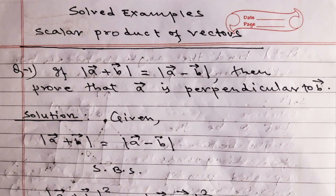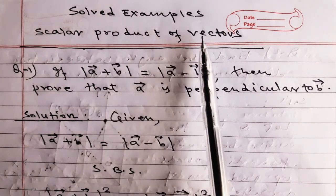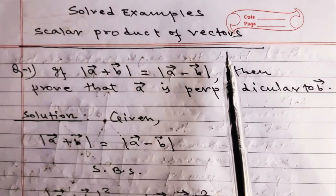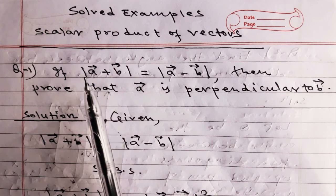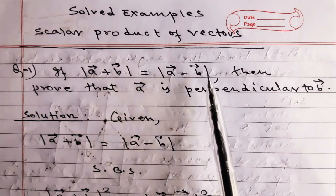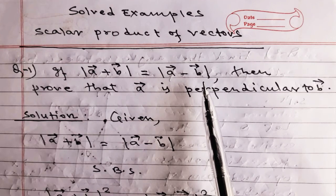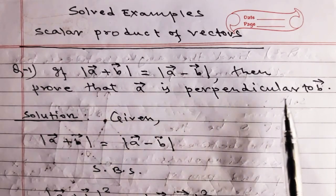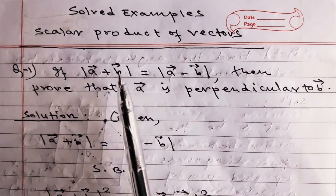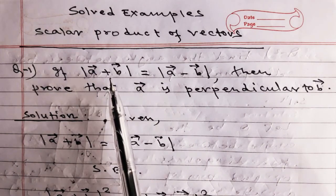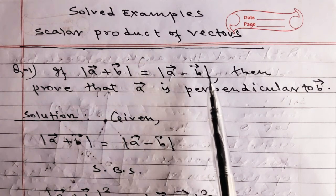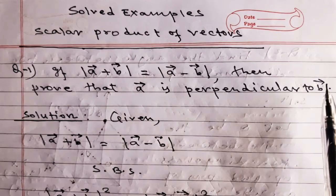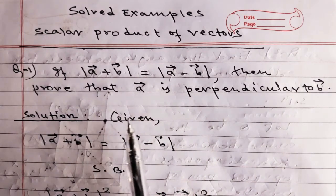Hello dear students, welcome to Corner Mass Academy. Today in this video we are going to discuss short examples of scalar product of vectors. Question number one: if the magnitude of vector A plus B is equal to the magnitude of vector A minus B, then prove that vector A is perpendicular to vector B.